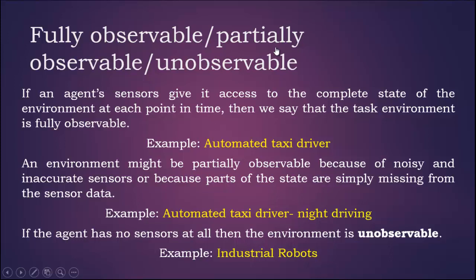An environment might be partially observable because of noisy and inaccurate sensors, or because parts of the state are simply missing from the sensor data. An example of a partially observable task environment is an automated taxi driver while driving at night with poor night sensors. If the agent has no sensors at all, then the environment is unobservable. An example of an unobservable task environment is industrial robots.